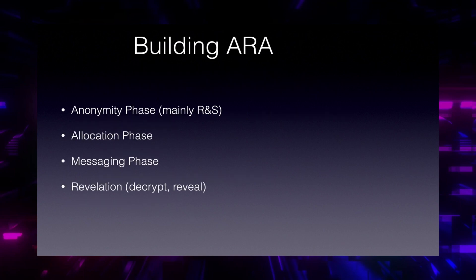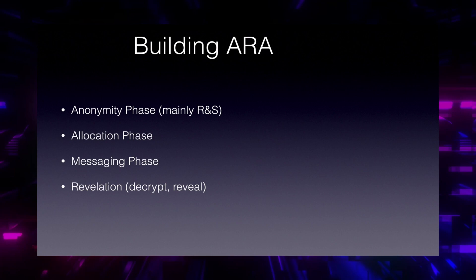Now let's start to build Aura. Aura has four main phases. The anonymity phase is mainly based on the idea of mixnet — randomized and shuffled. In this phase we try to hide the identity of the party. When that is done we go to the allocation phase, where we allocate data to the parties. Then we go to the messaging phase, where the data owner can send their data to the parties. Finally, the parties that have received the data decrypt the message and reveal themselves.